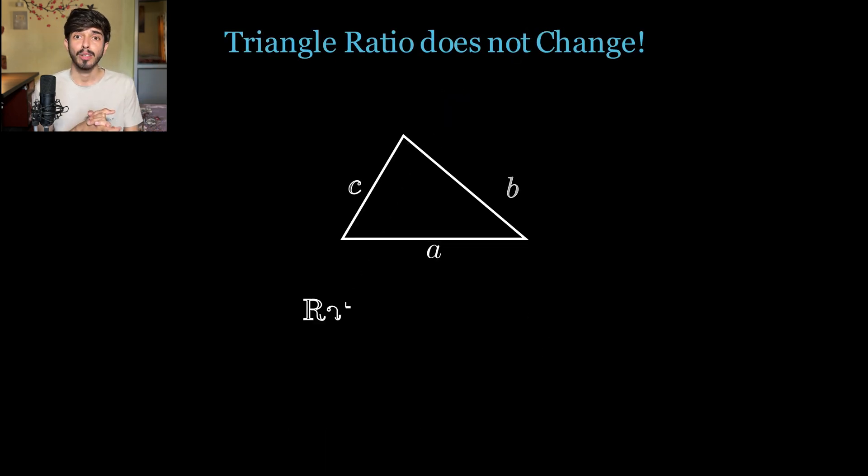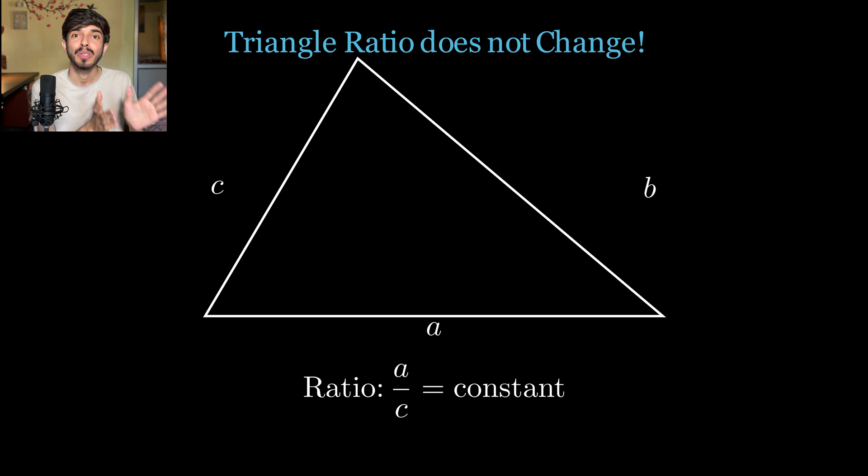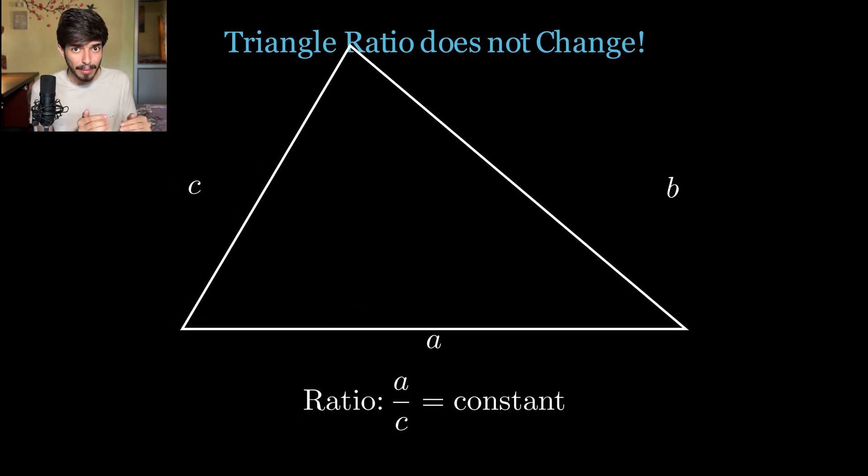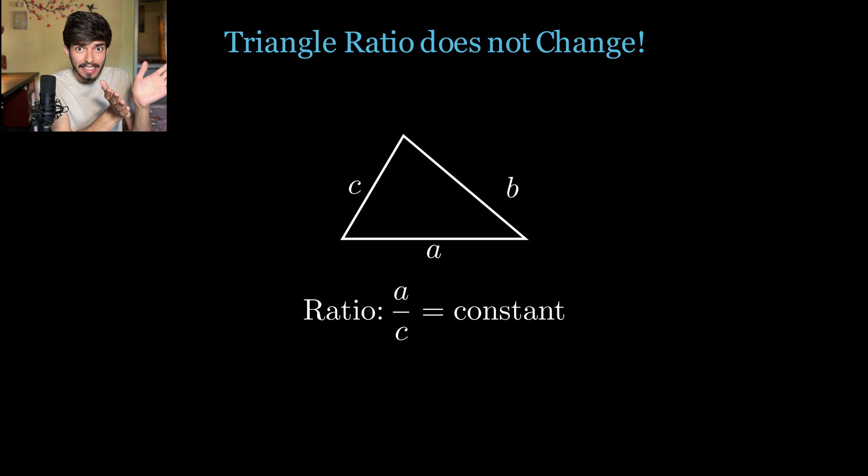The second thing we can observe is that once you fix these two angles, no matter how you scale this triangle, the ratios of the side also do not change. And this happens because to keep the angles the same, the sides need to scale proportionally to each other. This might seem like a small observation, but it's the foundation of pretty powerful ideas in trigonometry.